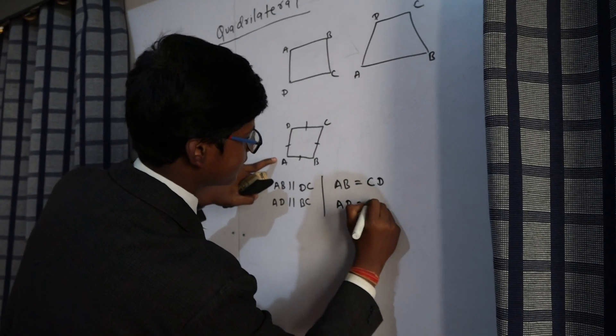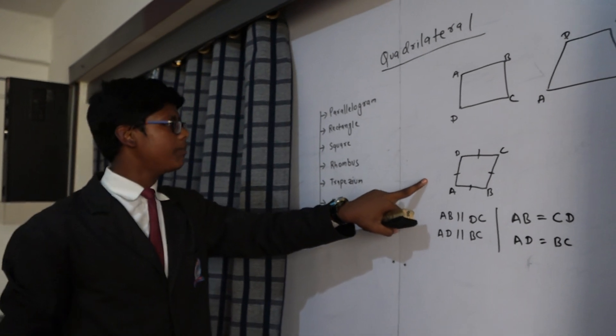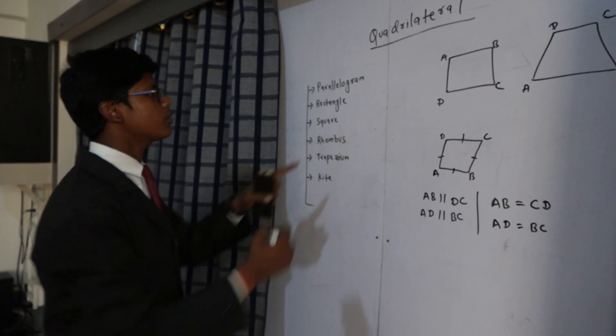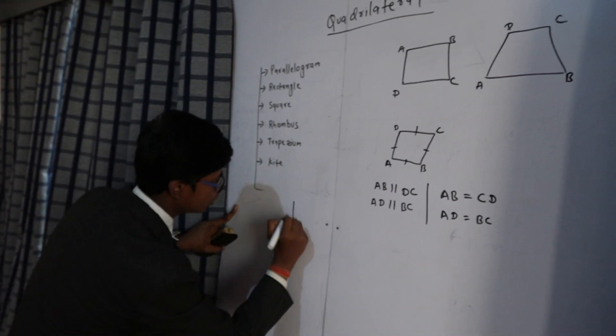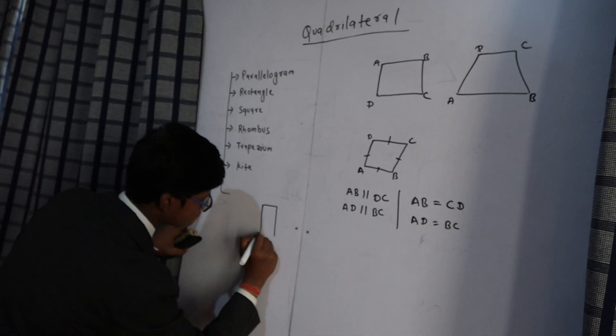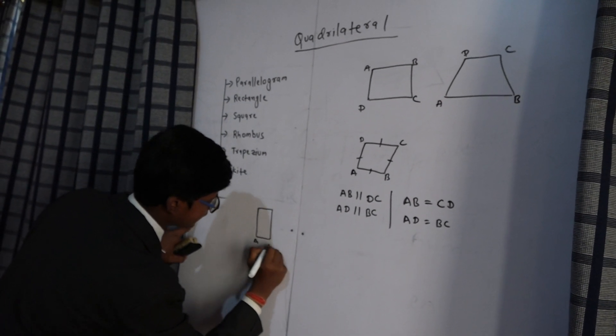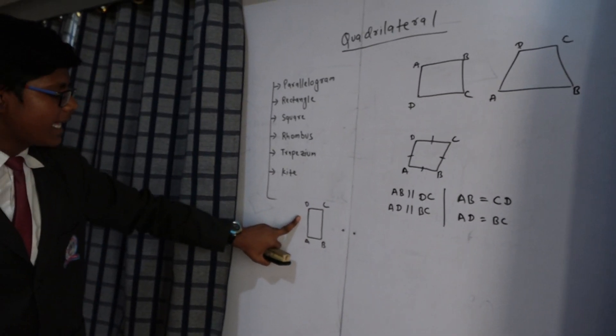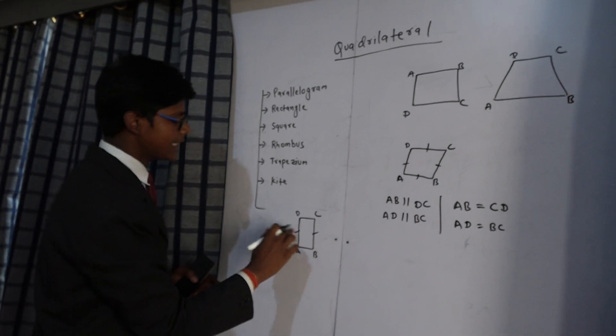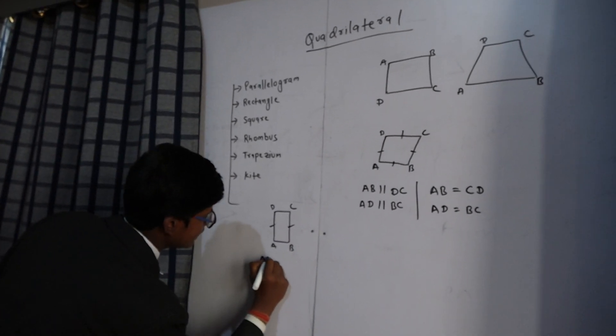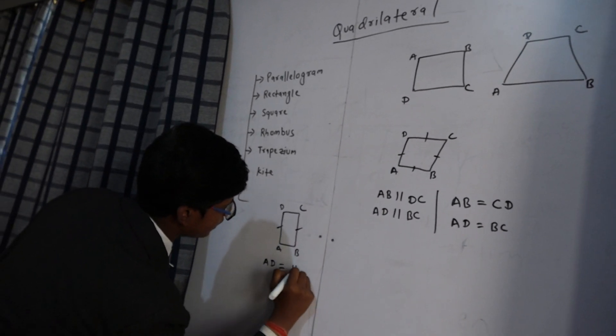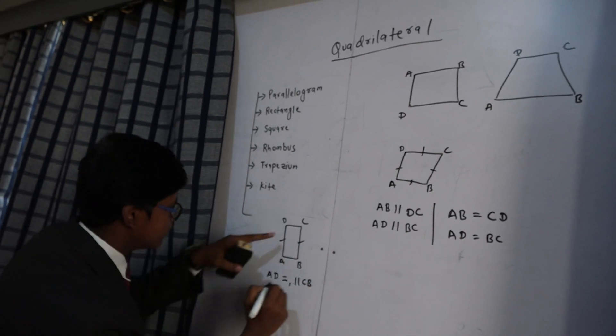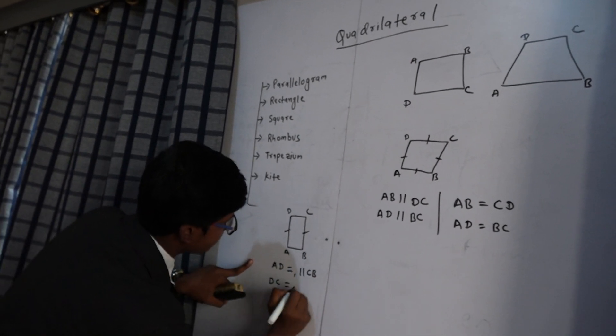Now you have some clarity about parallelograms. Moving to our next quadrilateral, that is a rectangle. This is the figure of rectangle ABCD. The properties of the rectangle are that its two opposite sides are equal. For example, AD equal and parallel to BC, and DC equal and parallel to AB.